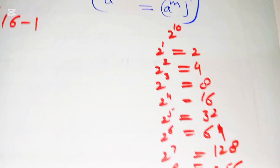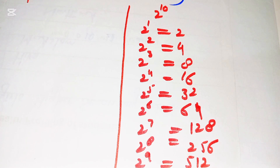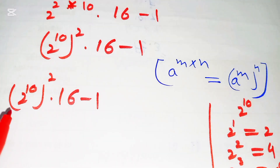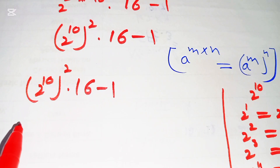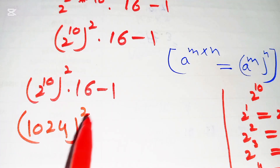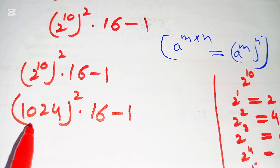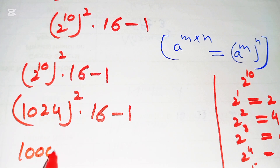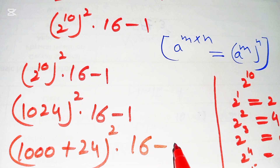Here is the table of powers of 2. Now 2 to the power of 10 is equal to 1024. So we substitute: 1024, whole to the power of 2, times 16 minus 1. And this 1024 can be written as 1000 plus 24, whole squared, times 16 minus 1.